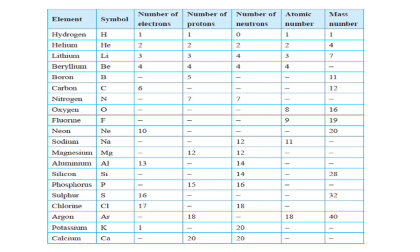For beryllium: electrons 4, protons 4, neutrons 4, atomic number 4. To get the mass number, take the number of protons (4) plus the number of neutrons (4), so the mass number becomes 8. For boron: the number of protons is 5, so the number of electrons equals 5. The atomic number equals the number of protons, which is 5. The mass number is 11, so to find the number of neutrons: 11 minus 5 gives 6 neutrons.